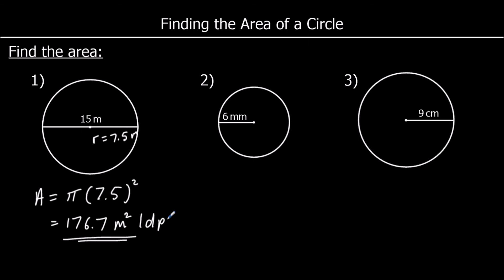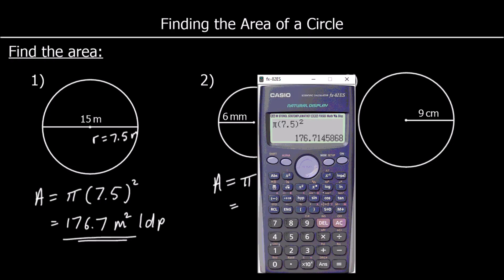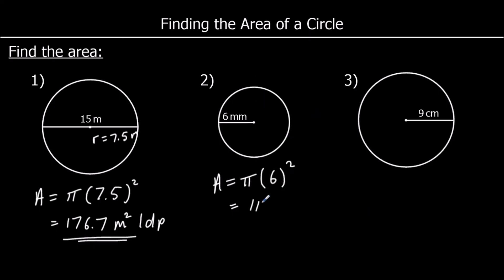Question two: the radius is 6 millimetres. The area is pi times the radius squared, so 36 pi, or as a decimal, 113.1 millimetres squared to one decimal place. Either 36 pi in terms of pi or the decimal — it doesn't matter unless the question specifies.